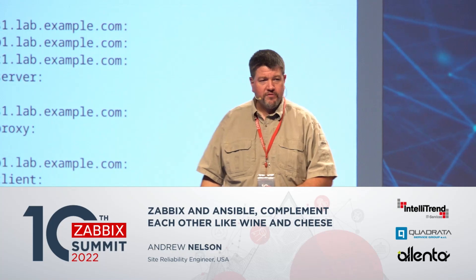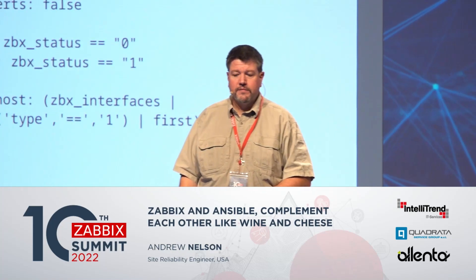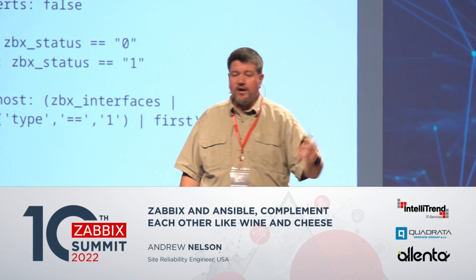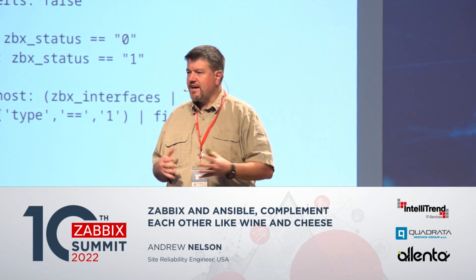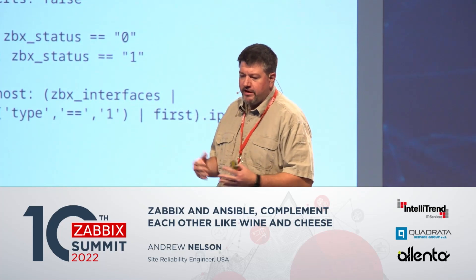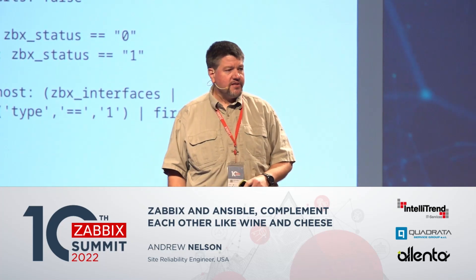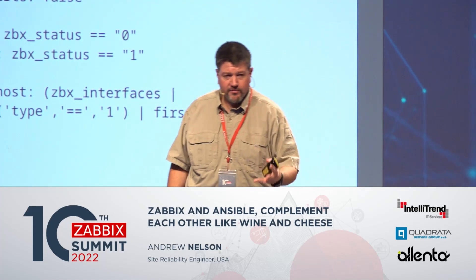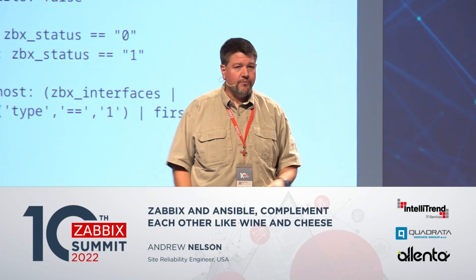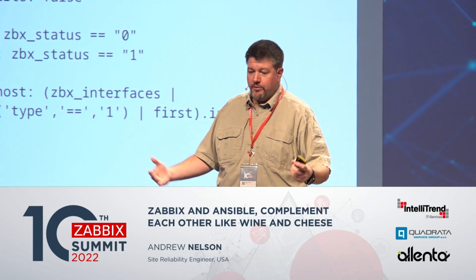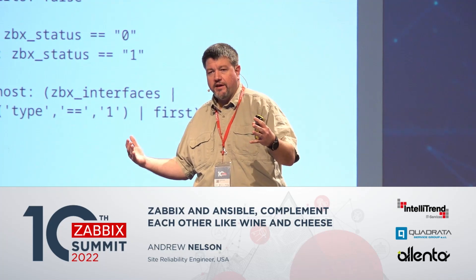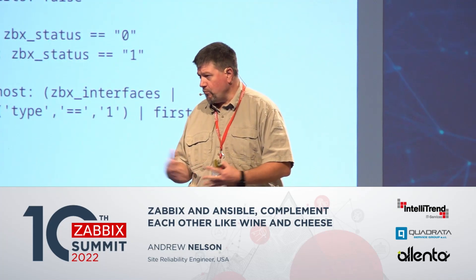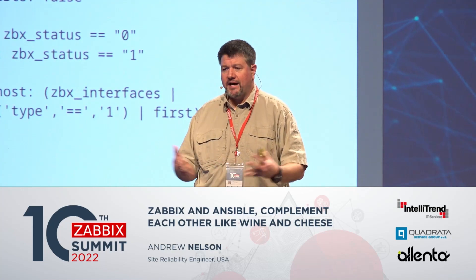Here's an example of a simple top-level static inventory file. I can also use Zabbix as my source of inventory. The Zabbix API inventory plugin is very straightforward. Here's the YAML configuration file for the plugin — we basically tell it what server to point to, give it a user login for the API, and then specify what we want to pull back.